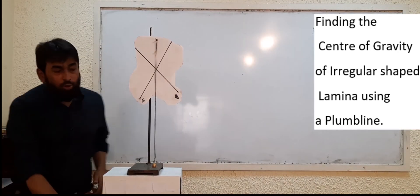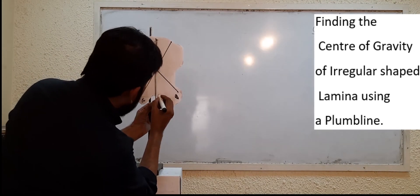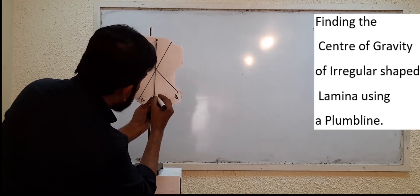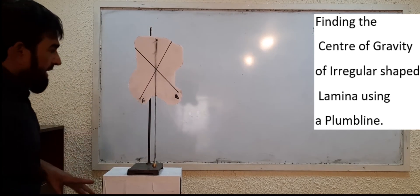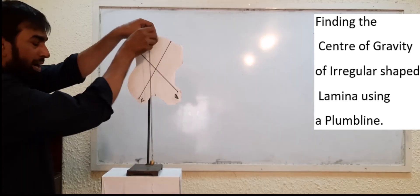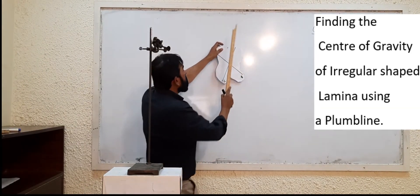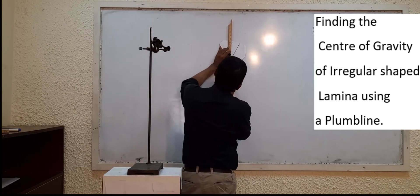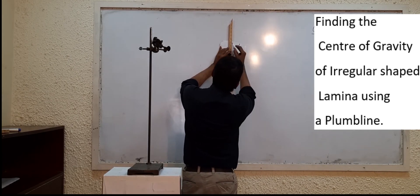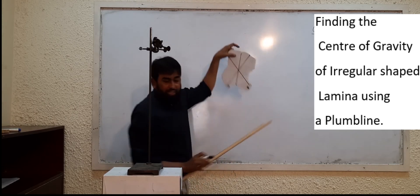Just behind the thread I am marking another point. I have drawn the third point. Now repeating the same procedure — I am using a thick marker here, but you must use a sharp pencil to attain accuracy. Now all three lines are intersecting at a single point.